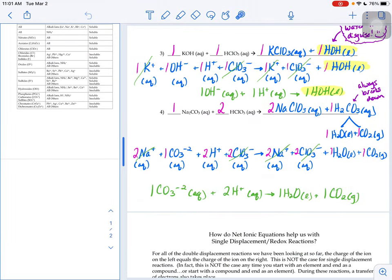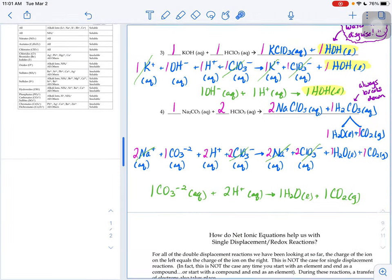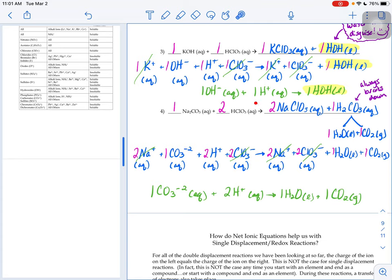So if at first you saw this is aqueous, aqueous, aqueous, aqueous, that means that all four of those, when we go to break them up into their ions, all the ions would end up being spectators, and maybe you accidentally predicted number four as being a no reaction.